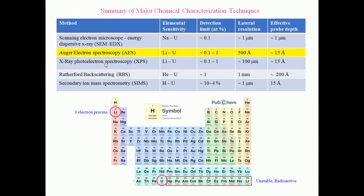I have another table listing techniques for chemical characterization: EDAX, AES, XPS, RBS, and SIMS. In my previous lecture, we covered EDAX — energy dispersive analysis for chemical composition — which can analyze elements from Z equals 11 (sodium) up to uranium. If you want to analyze elements below sodium, such as hydrogen, helium, lithium, beryllium, boron, carbon, up to neon, then techniques like AES, XPS, RBS, and SIMS are useful.